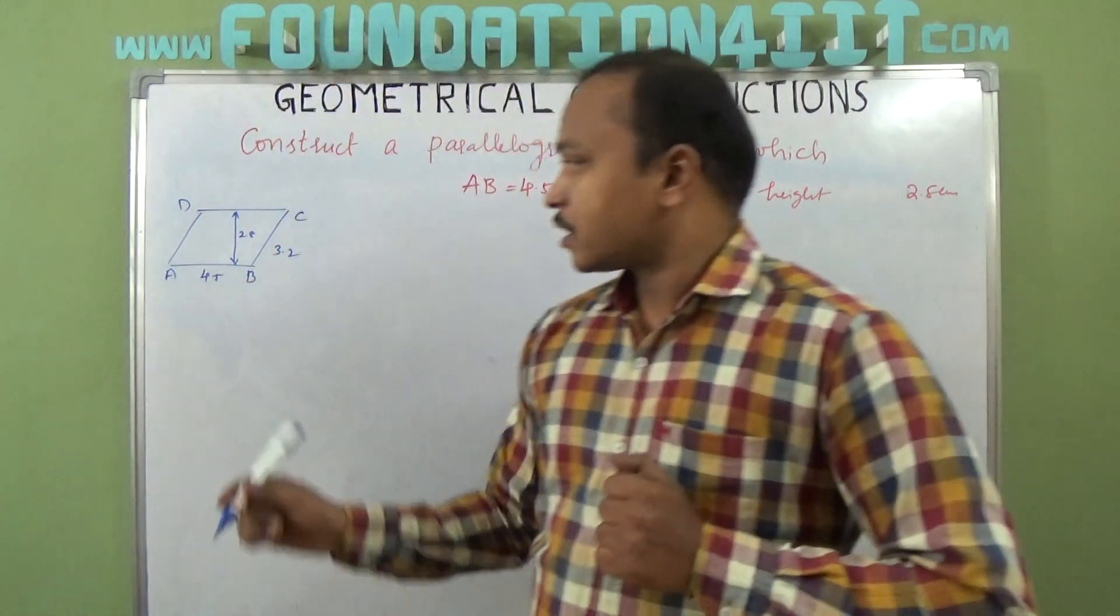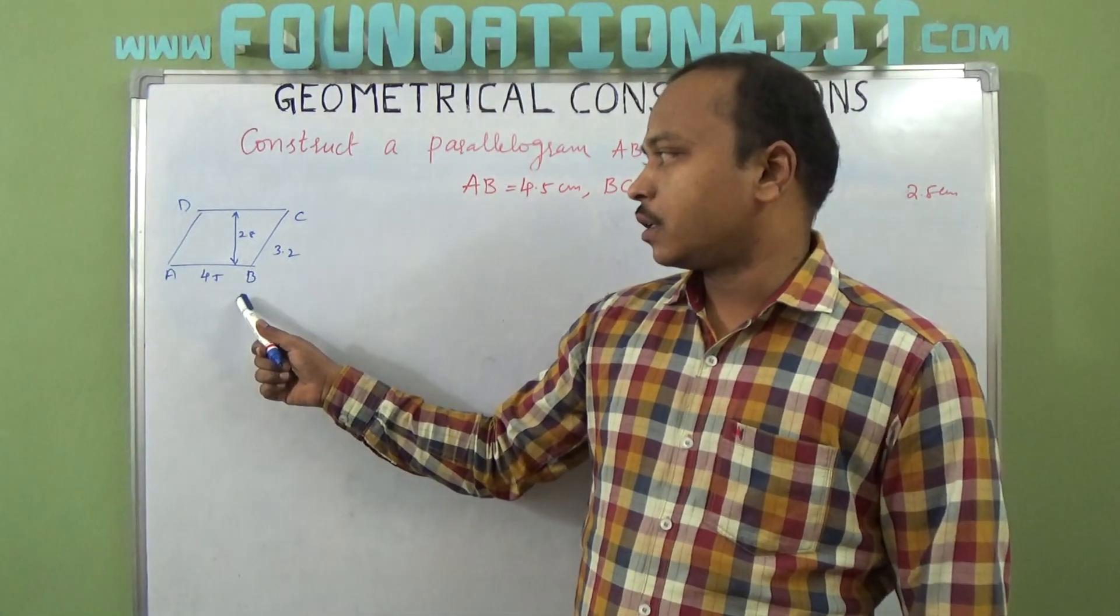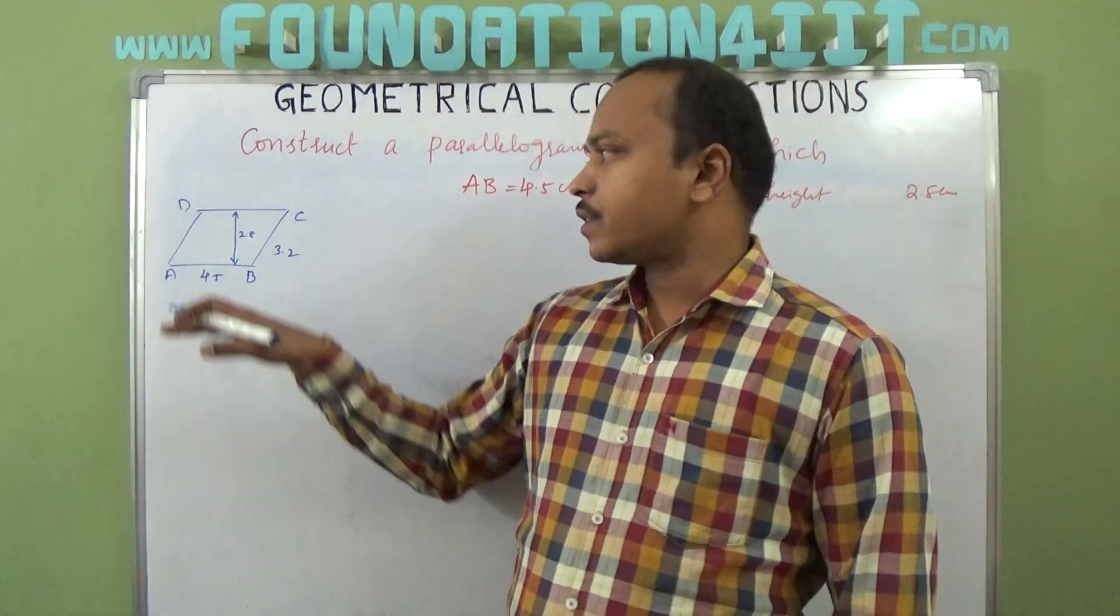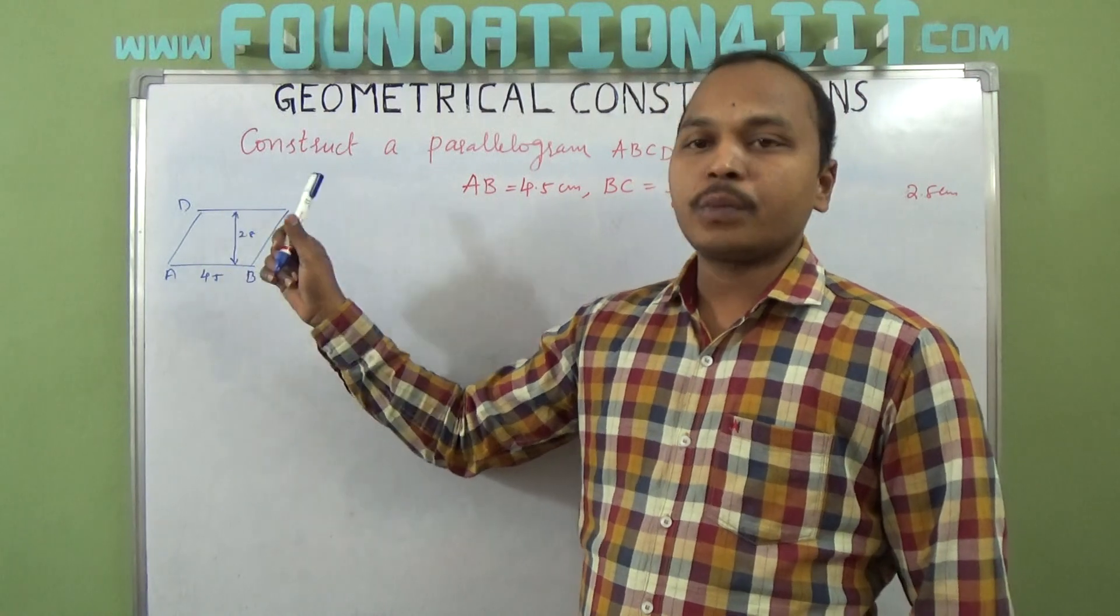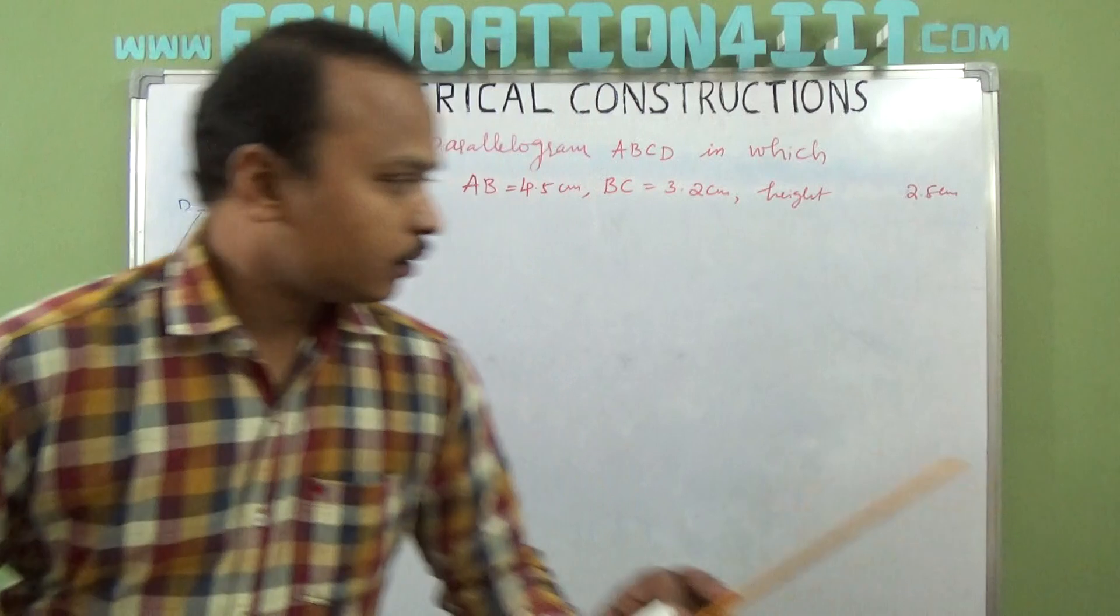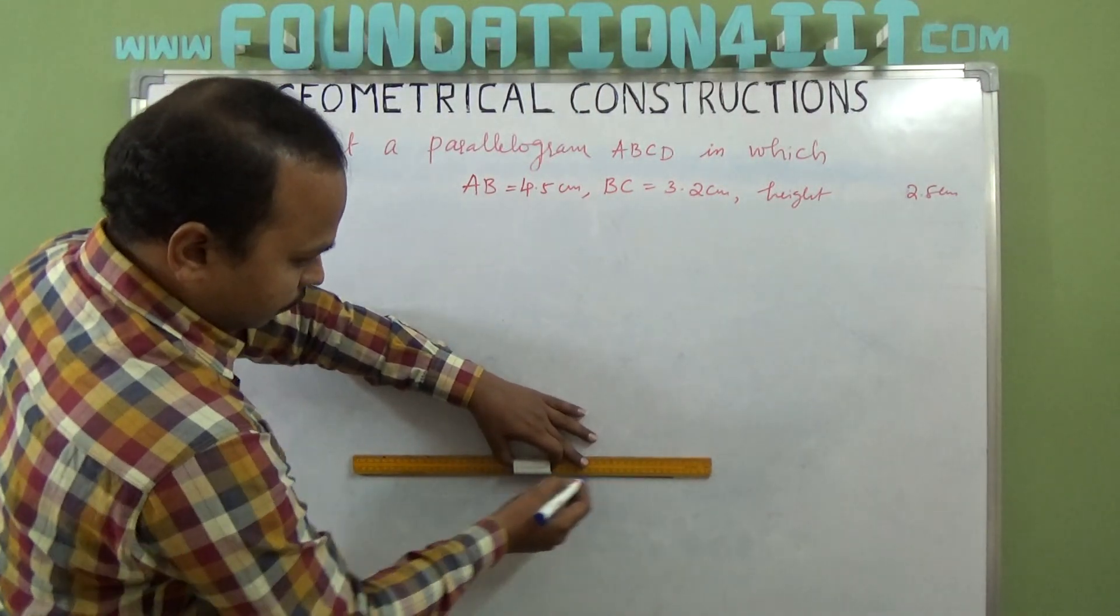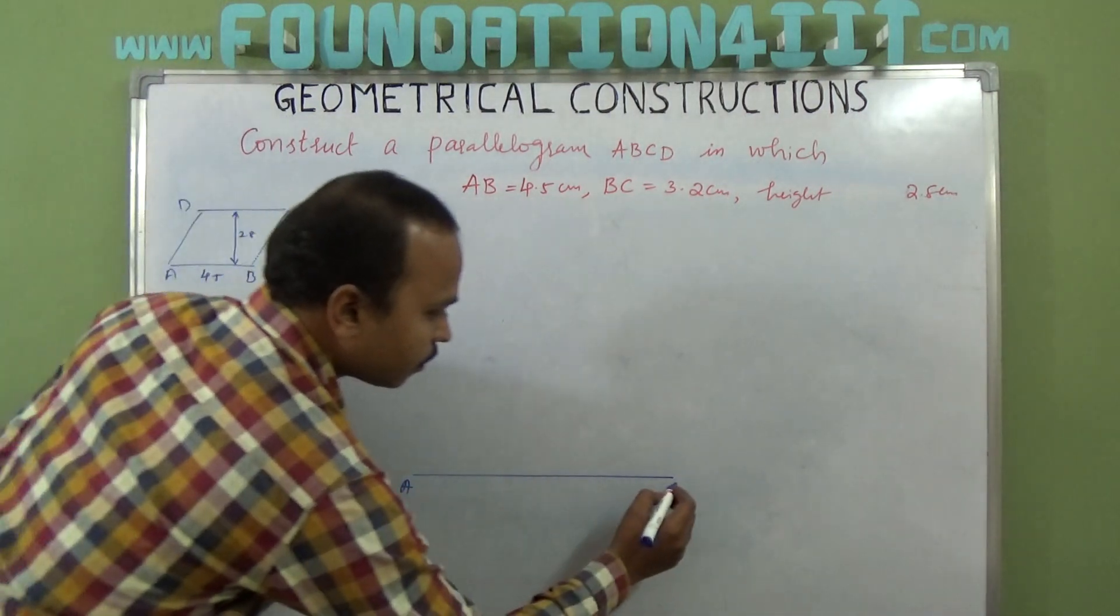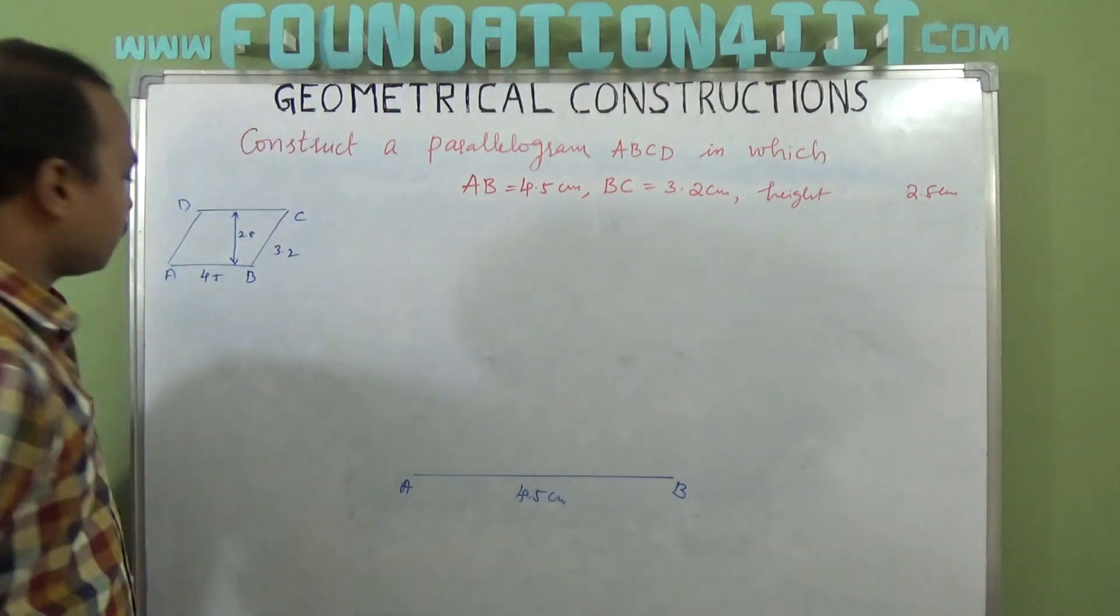Now you have to construct. First of all, we'll construct a line segment AB of 4.5 centimeters, and we need to draw a perpendicular by setting always any perpendicular line to AB. Then we need to take 2.8 centimeters arc. Let's see step-wise. First, we take AB - AB is 4.8 centimeters.